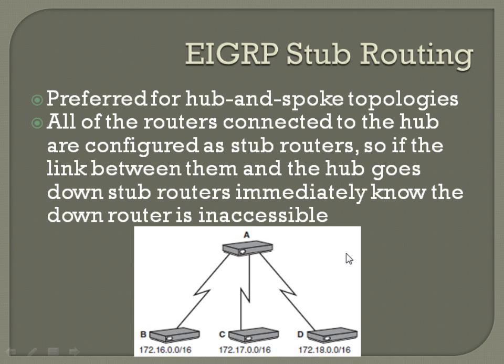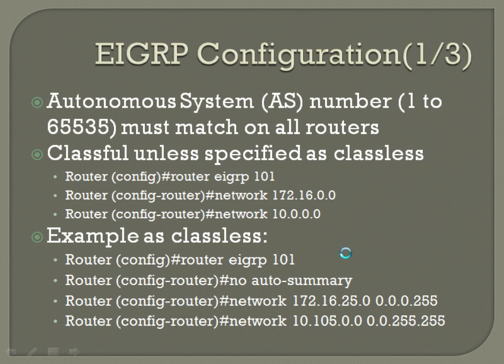EIGRP configuration: the autonomous system number, the AS number, can be 1 through 65,535. This is the one that must match on all routers. With OSPF, the process ID didn't matter. On the AS number for EIGRP, it does have to match.